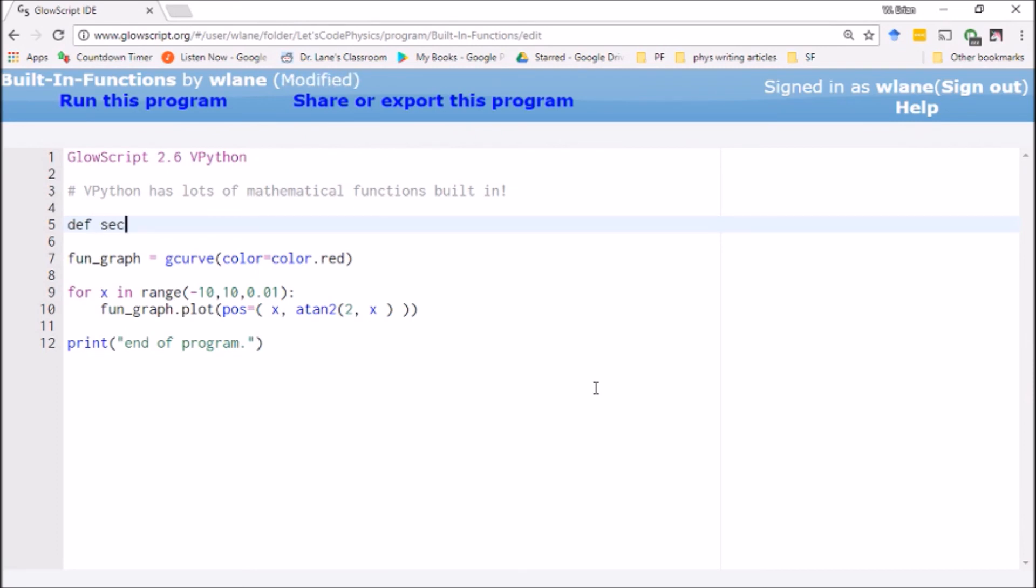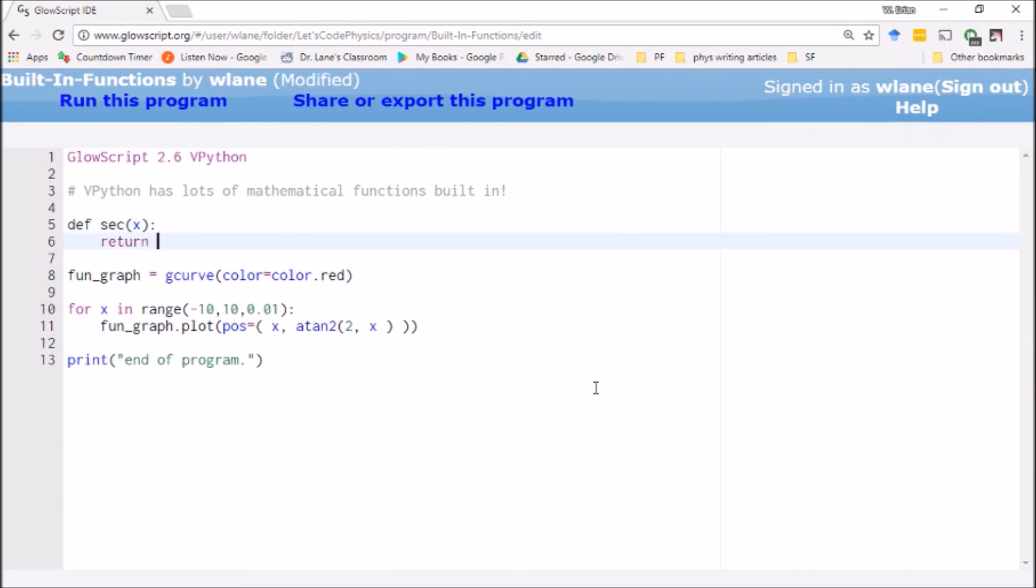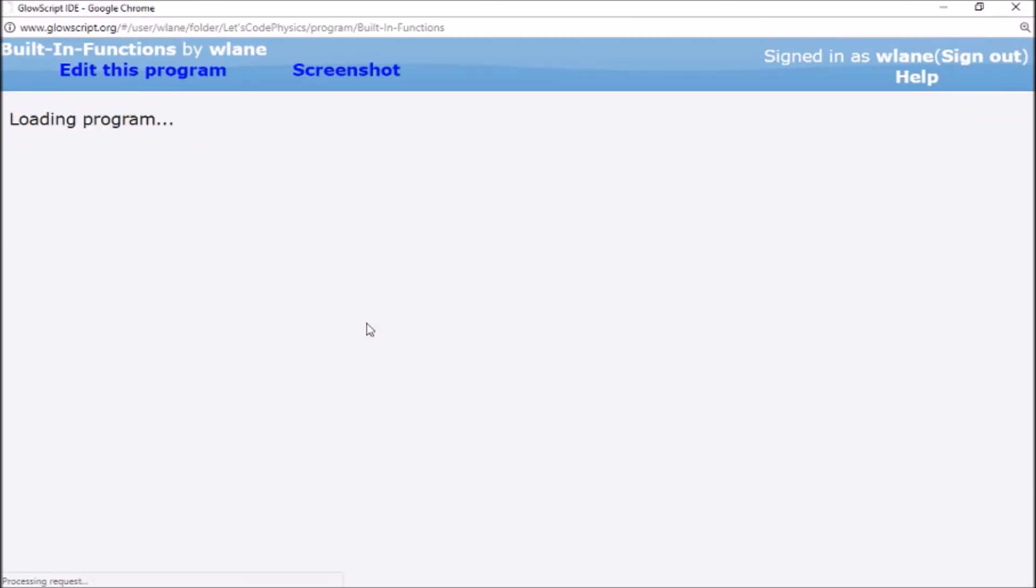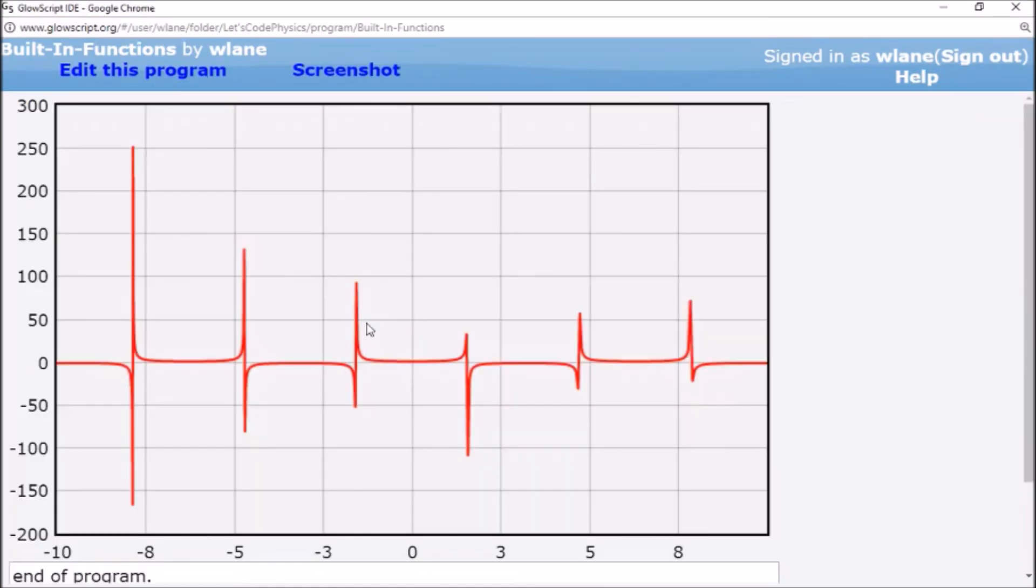So for example, you could define the secant as being 1 divided by the cosine of x. So if I wanted secant, I would use secant here. I'd have to define it on my own. But once I've defined it, I can use it here. Hit control 2. And there you go. There's the secant function.